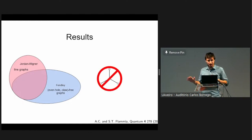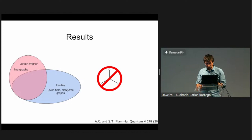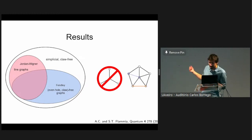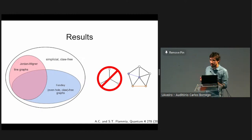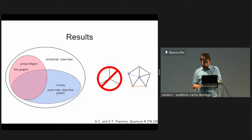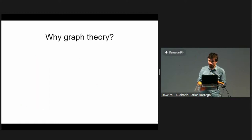What these two classes of graphs have in common is that they both have no claws. It would be nice to say that's it — no claws means free fermion — but unfortunately that's not enough. You also need something called a simplicial clique. A graph that is claw-free and contains a simplicial clique is called simplicial-claw-free. Previously it was known that Jordan-Wigner works for line graph frustration graphs, then we showed even-hole-free claw-free works, and now we've unified those by showing simplicial-claw-free graphs are also free fermion.